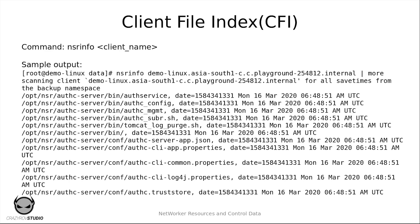First, let's look at the client file index. The client file indexes are stored under the index folder. The index folder itself would contain multiple folders within it, each folder representing one configured client on your NetWorker server. The client file index stores information about each backed-up file on the NetWorker client. This information is required when you want to do a browsable recovery of a respective client. Each record for a client file index is around 160 bytes.